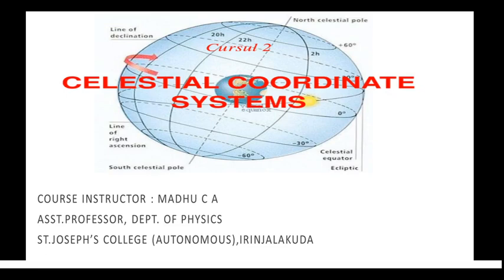Good morning. Today we are going to deal with celestial coordinate systems. We know different types of coordinate systems, like a Cartesian coordinate system and spherical polar coordinate system. Here in this class we are going to study about celestial coordinate systems.